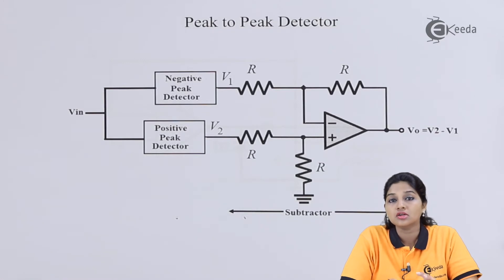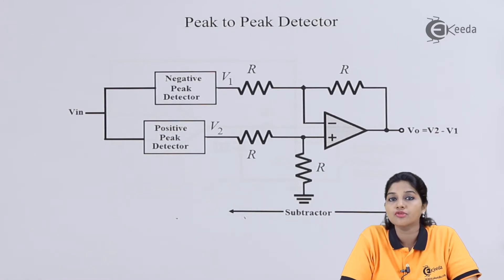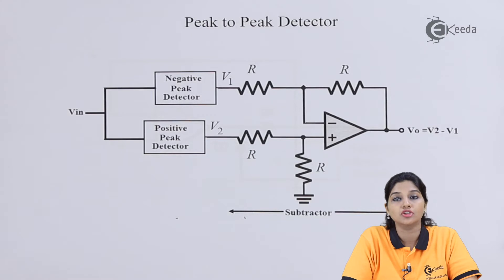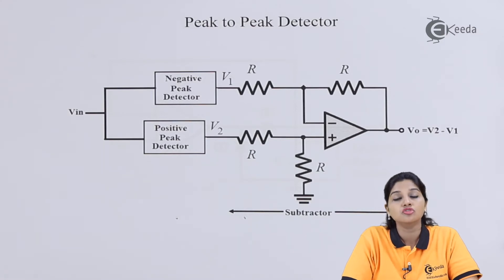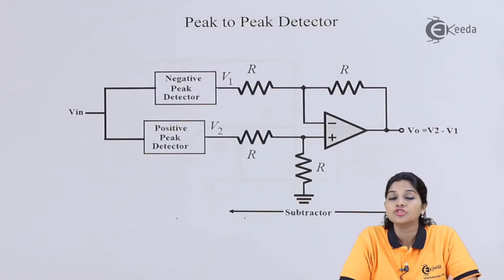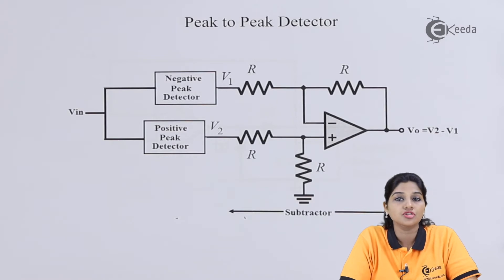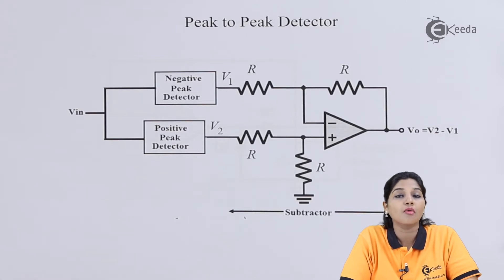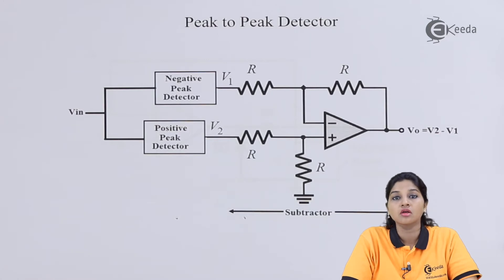In the circuit of a peak detector, whether positive or negative, it is very important that the input signal has an increasing magnitude rather than a constant magnitude. The positive peak detector circuit will work only during the positive half cycle of the input signal and detect the positive peak value.